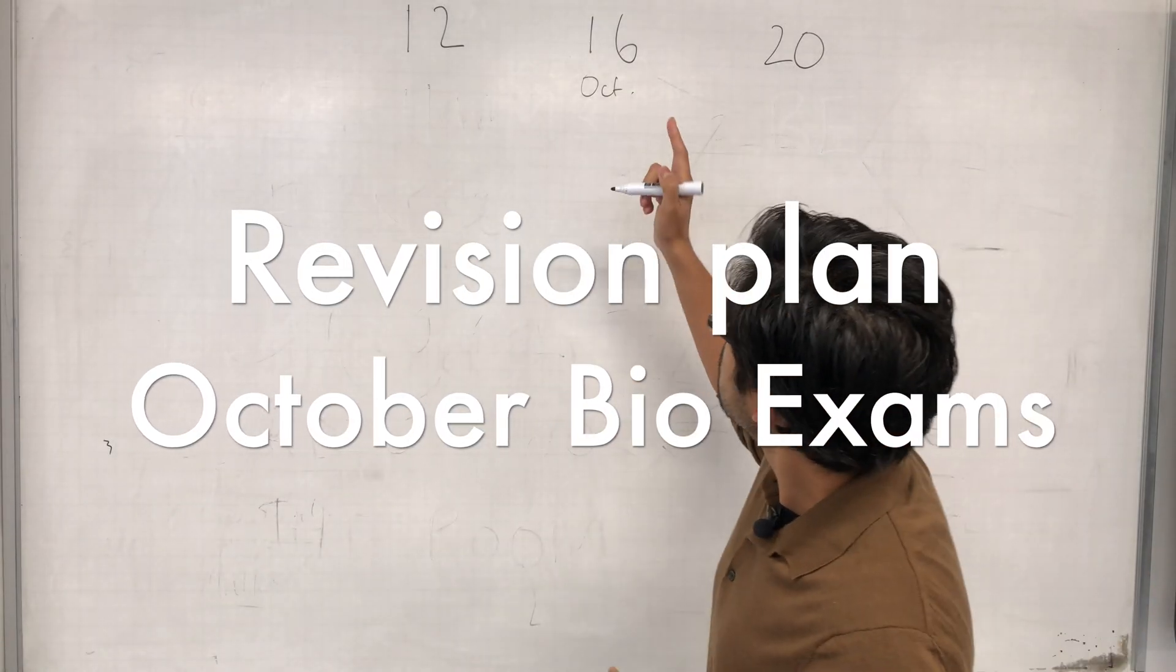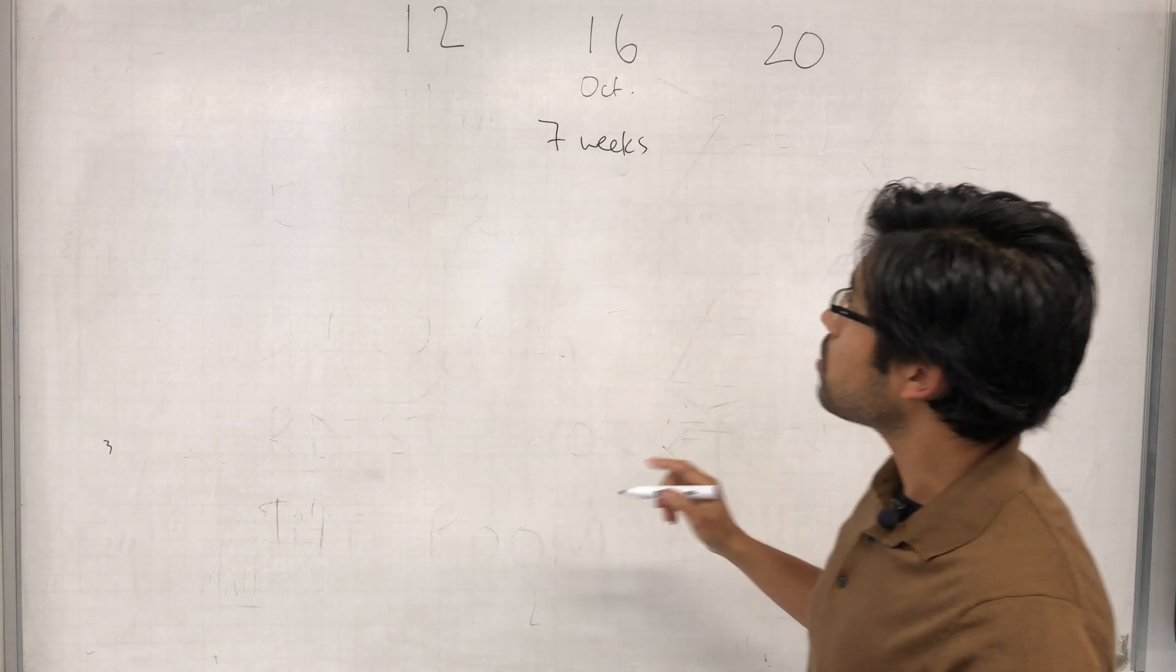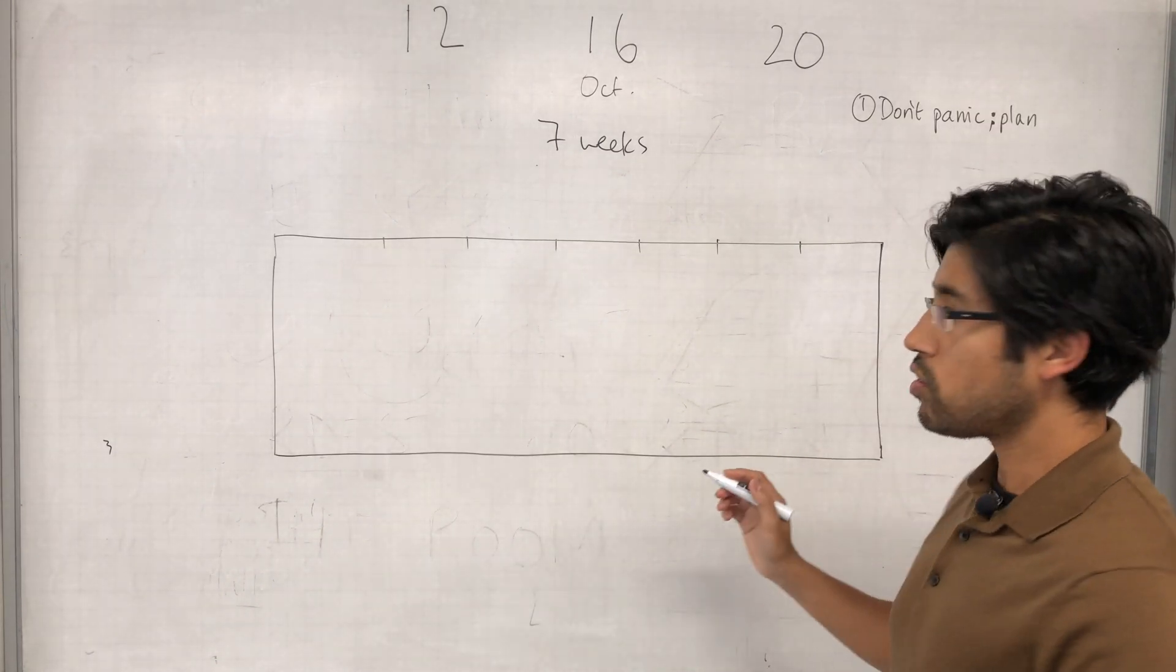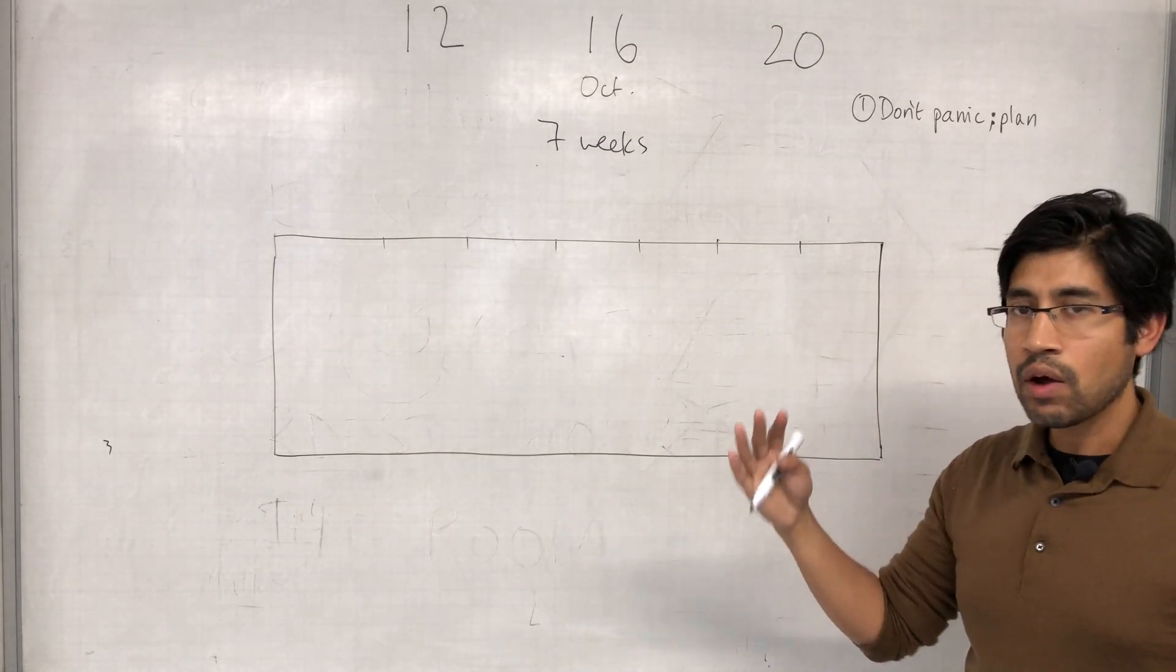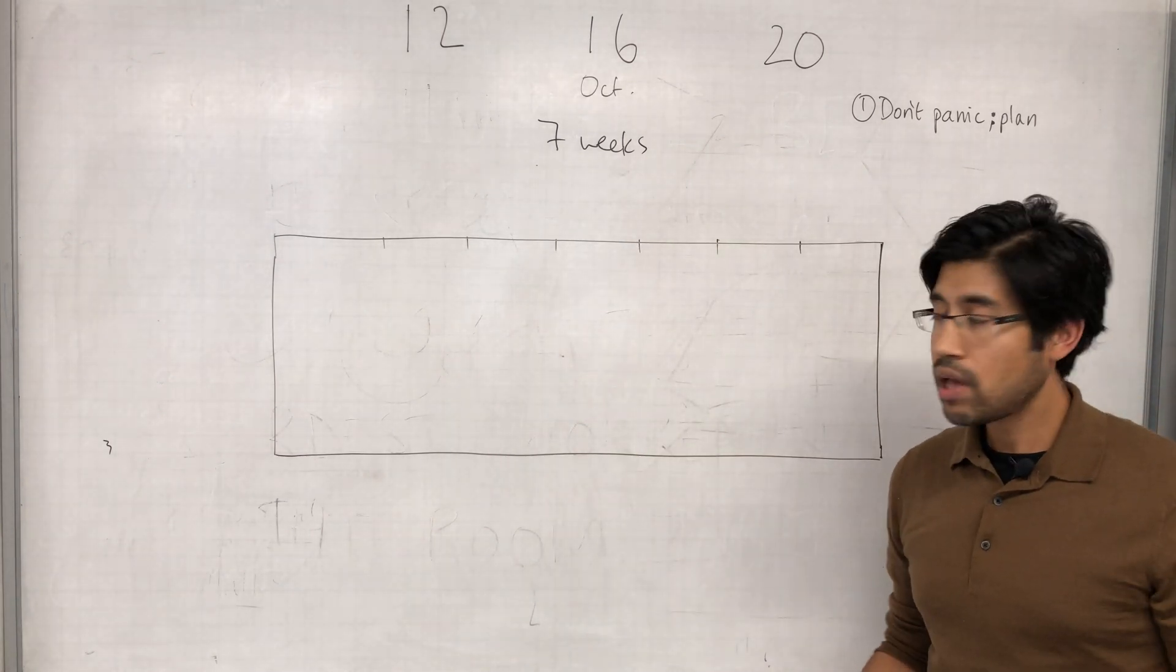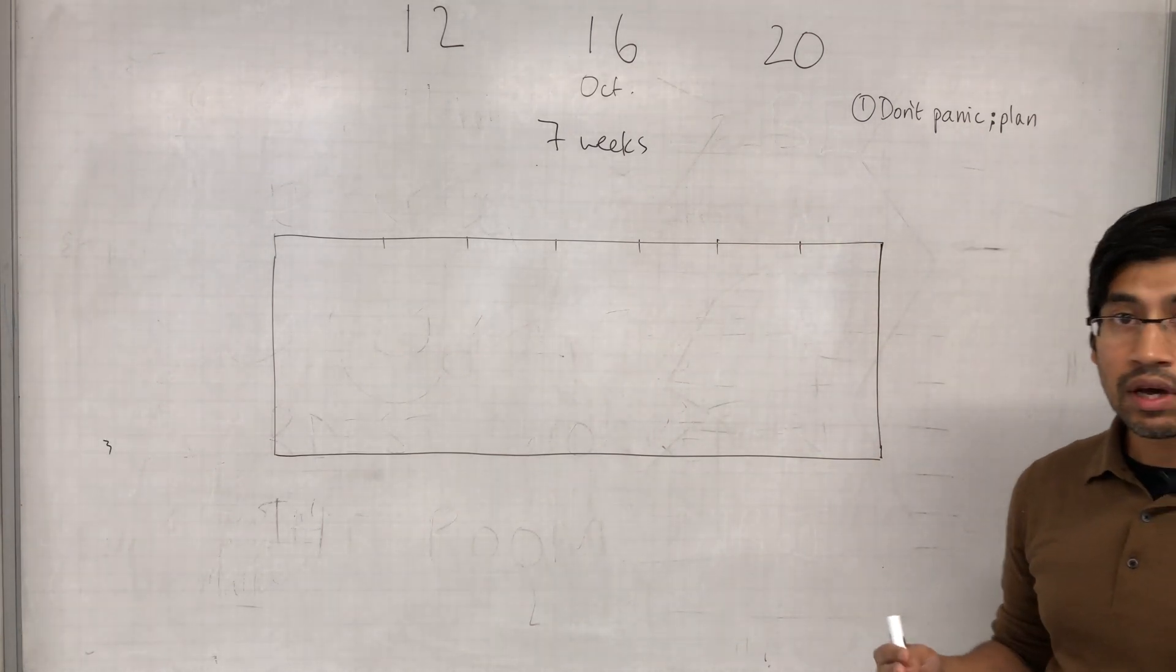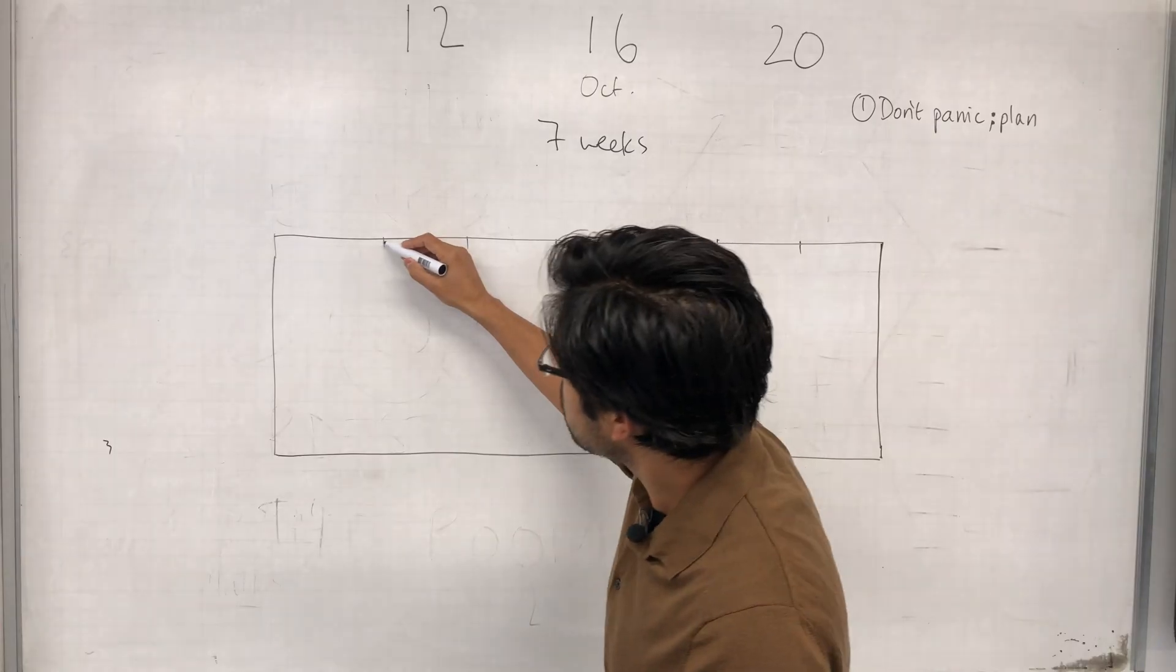We've got seven weeks. Tip number one is going to be don't panic. Do not panic. Have a plan. This is what seven weeks looks like. The things that I'm going to discuss, I've planned it out thinking about these seven weeks, but depending on when you watch this or however much time you've got left, you can tweak it, absolutely tweak it. This is primarily a discussion of what to do when you have a limited amount of time to get something done.